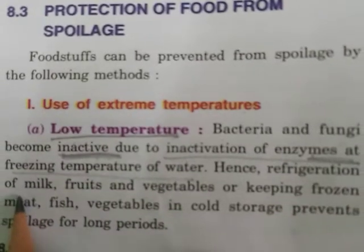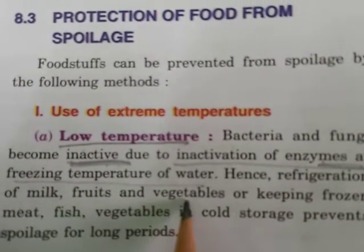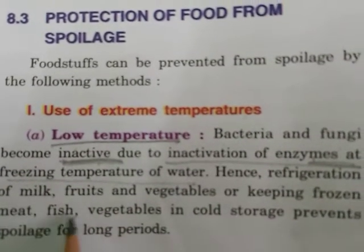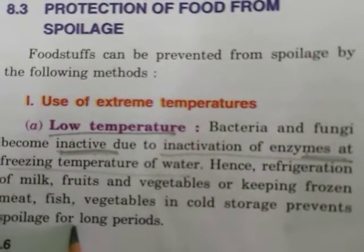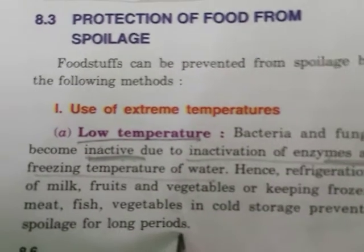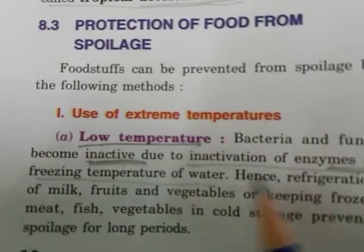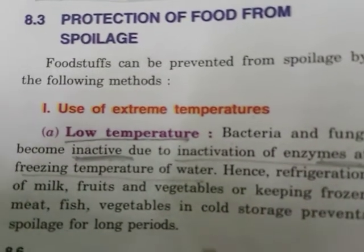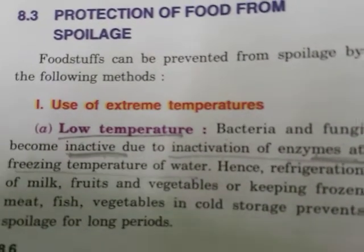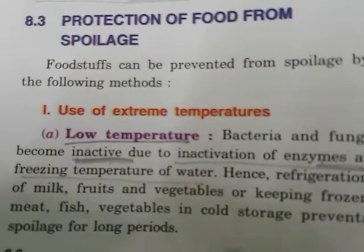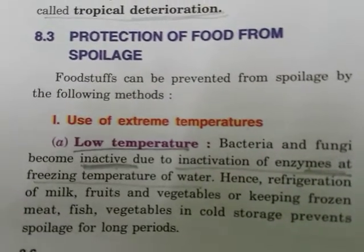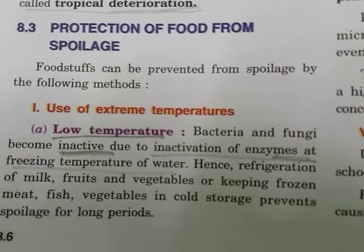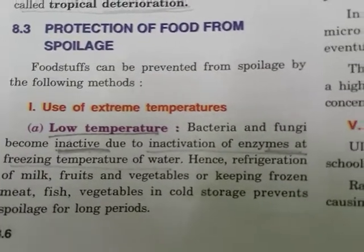Hence, refrigeration of milk, fruits, and vegetables, and keeping frozen meat, fish, and vegetables in cold storage, prevents spoilage of food for a long period. Because bacteria and fungi become inactive at low temperatures, we can keep fruits and vegetables in refrigerators or in cold storage to prevent spoilage.